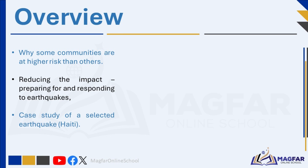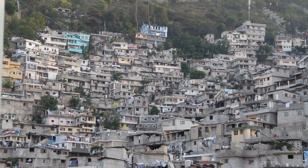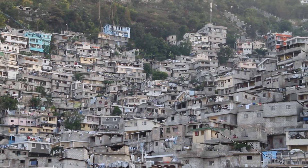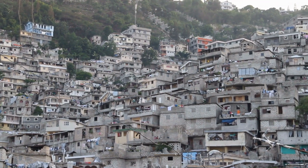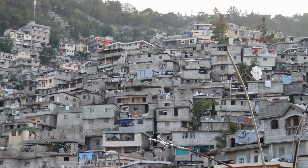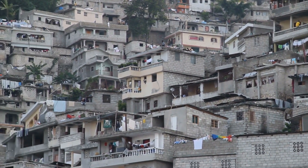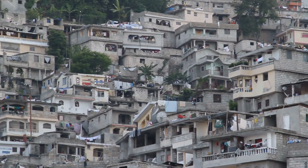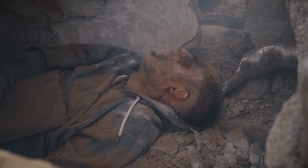Several factors contribute to why some communities experience greater earthquake risks than others. People who live close to plate margins are always at a higher risk of being affected by a powerful earthquake. How much an earthquake affects people in an area depends on things such as how many people live there, the quality and construction of their buildings, how well the area is prepared, and the availability of people who can rescue and treat survivors.